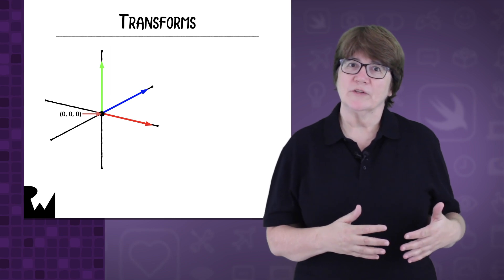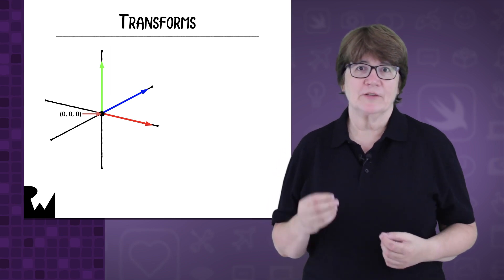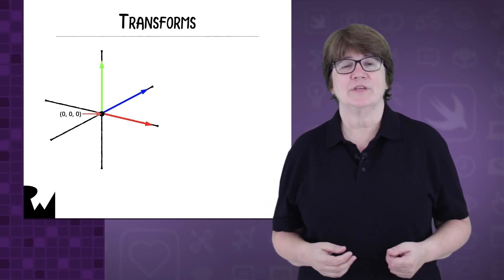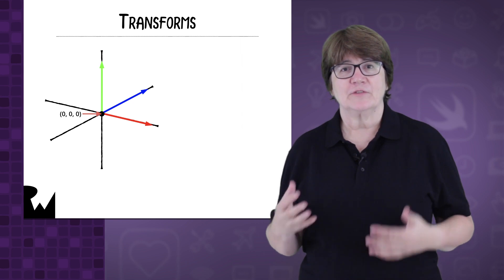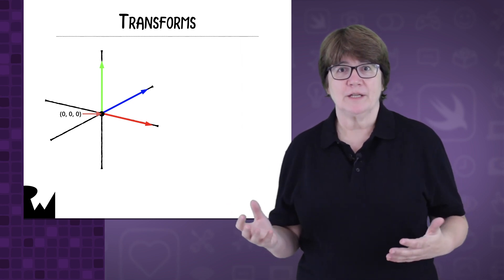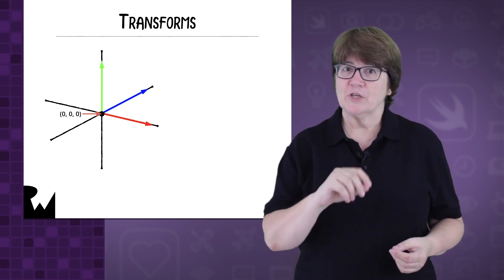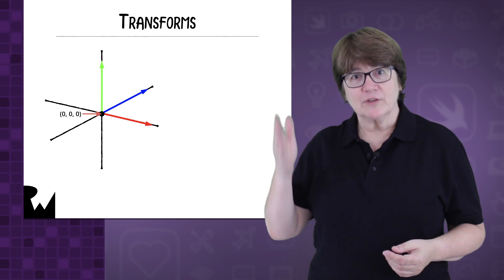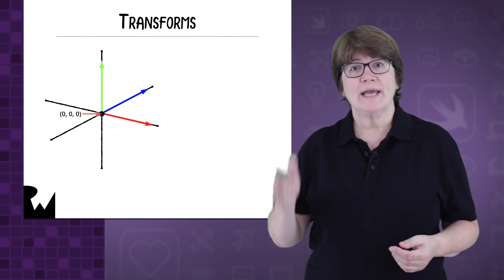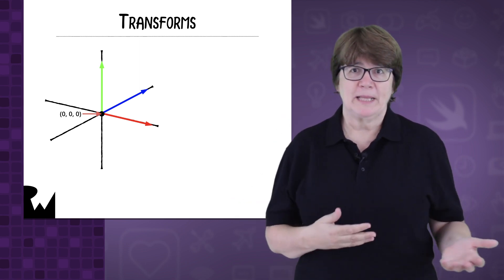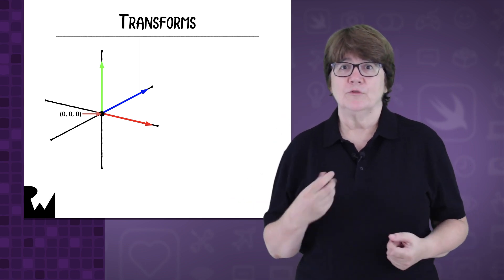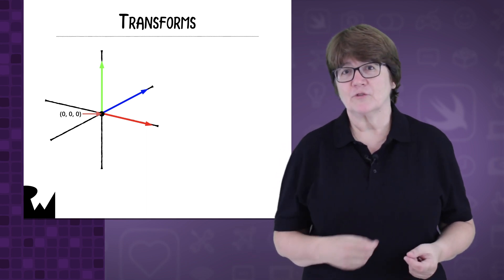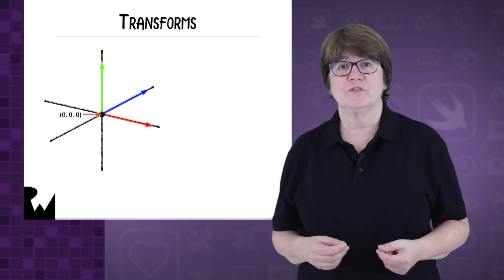We work in a coordinate space that has x, y and z axes. At the centre of these axes is the origin — that's at position zero in all directions. Our up axis will be the y axis, but some apps such as Blender use z for the up axis. It doesn't matter as long as your app is consistent.